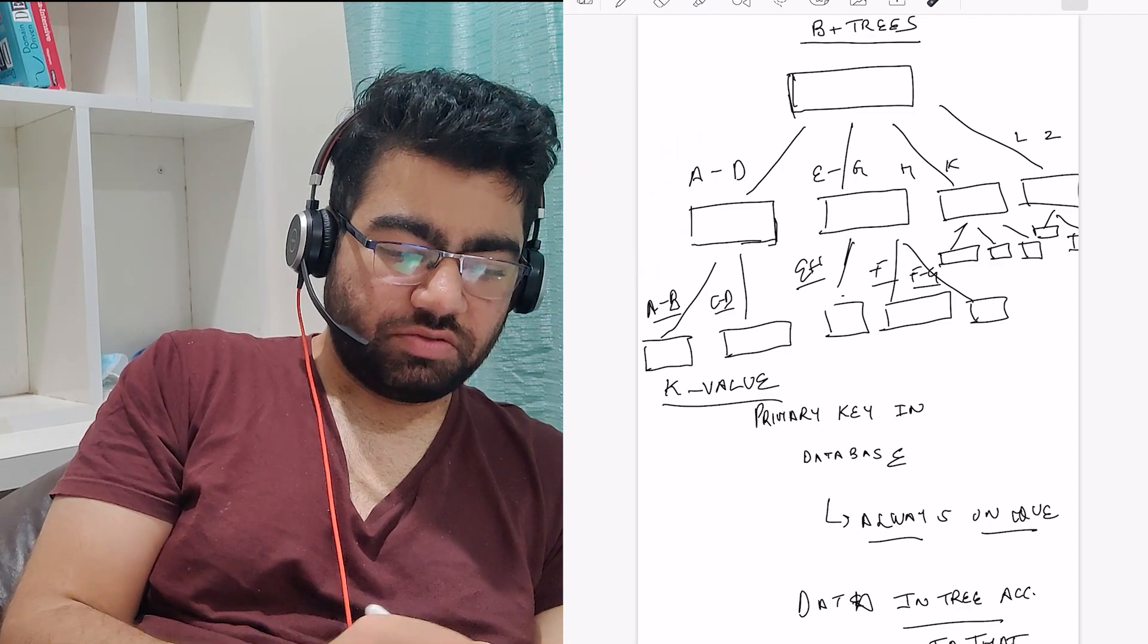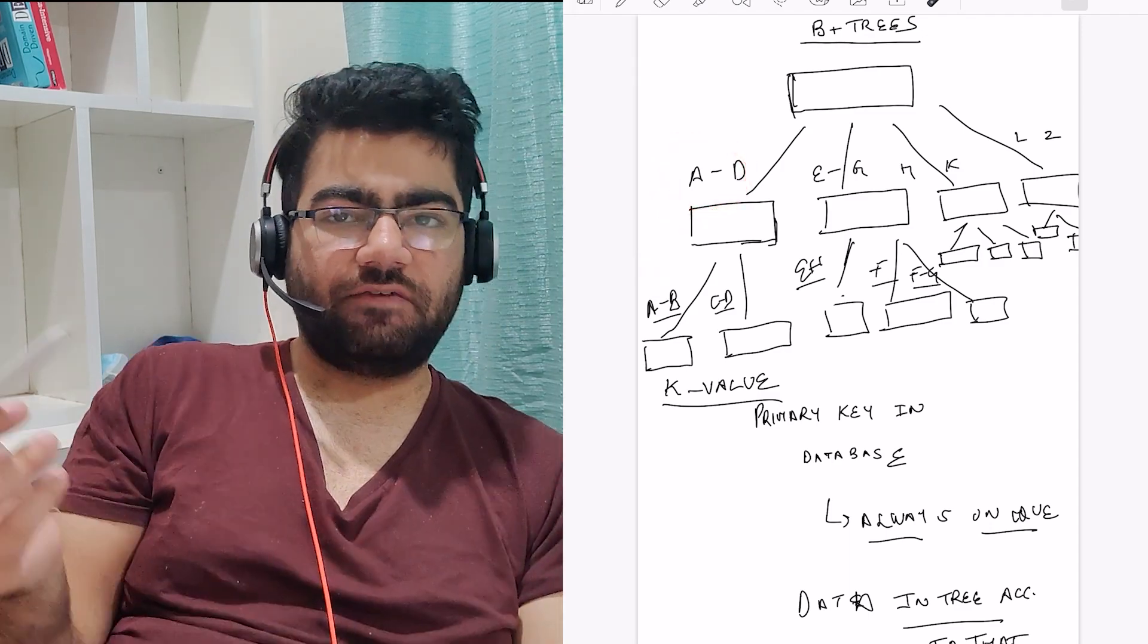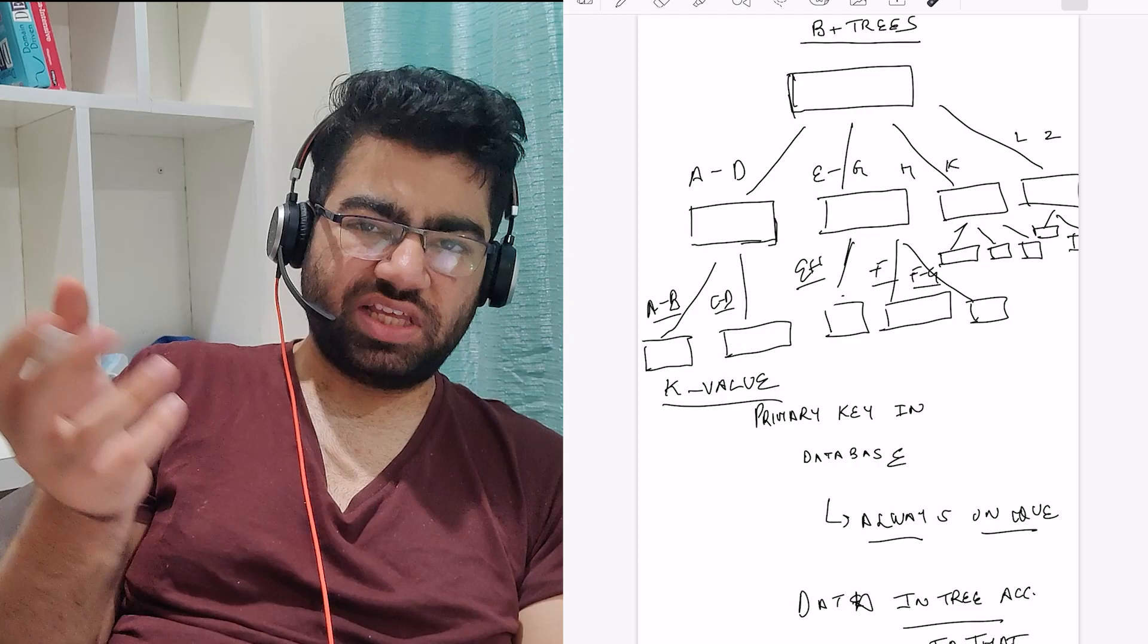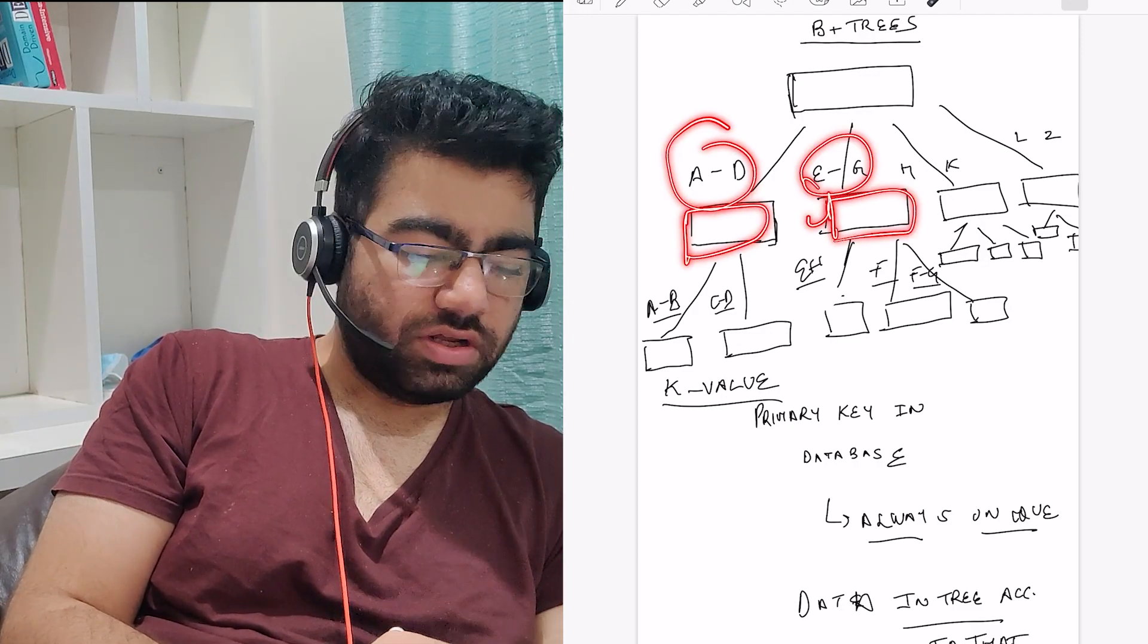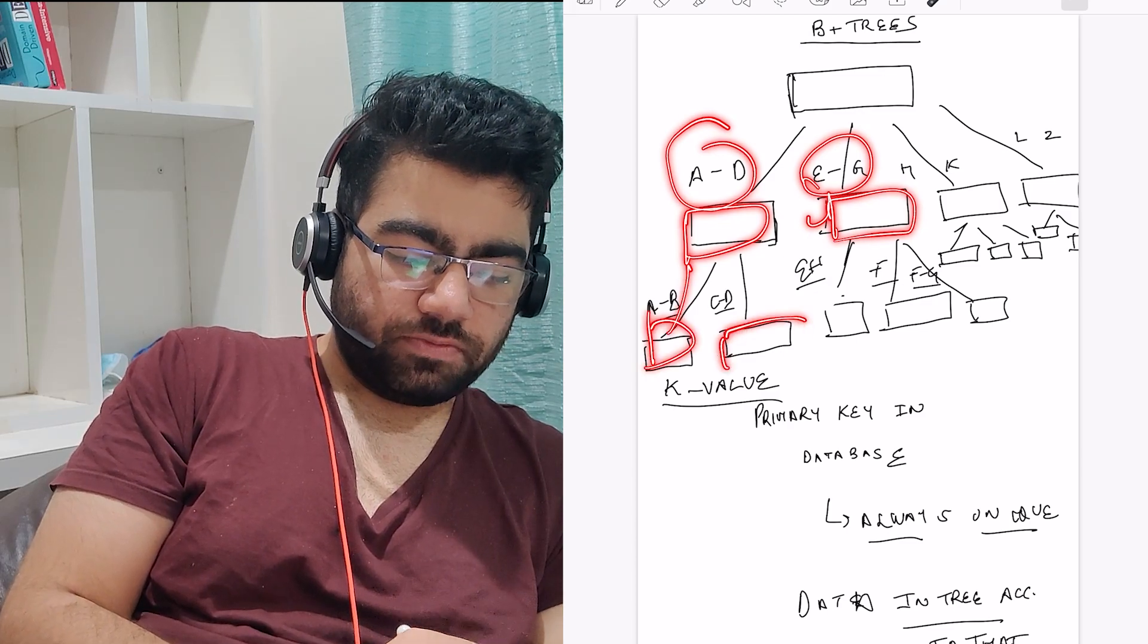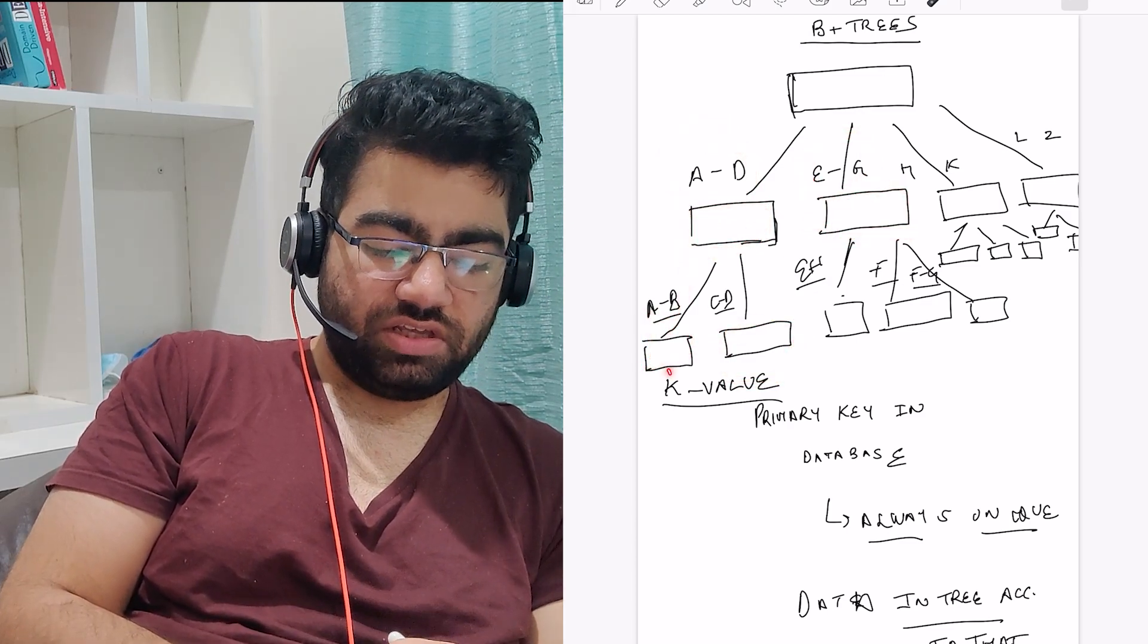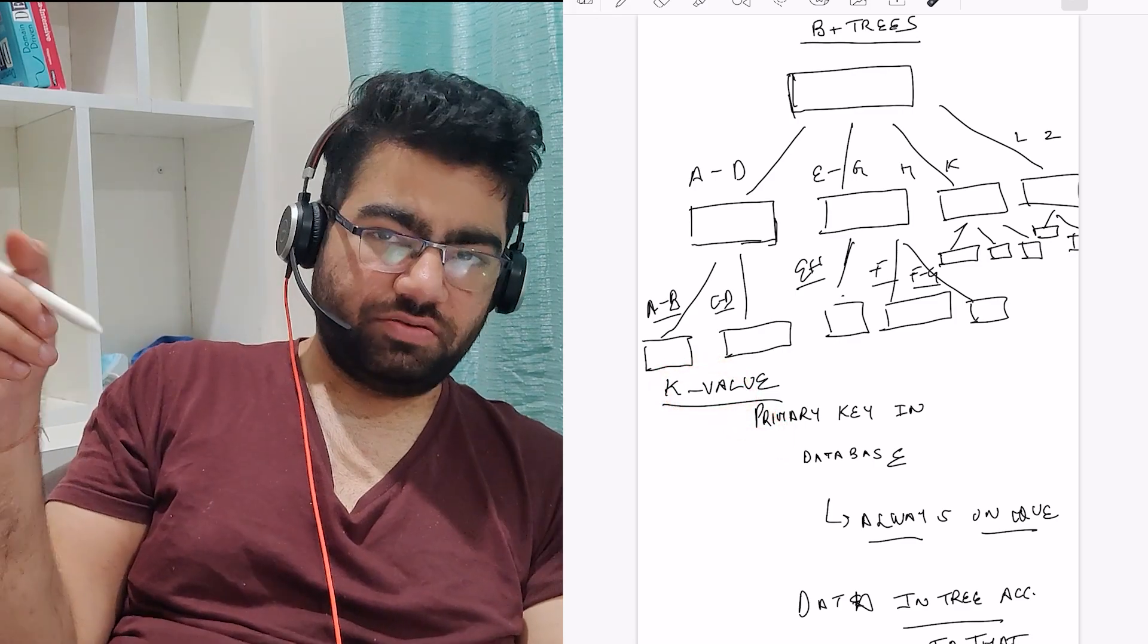For example, let's suppose A to D - I'm thinking just simple keys. It is stored A to D in this node, then A to G in the other node, and this further branches down.